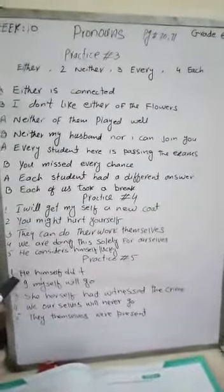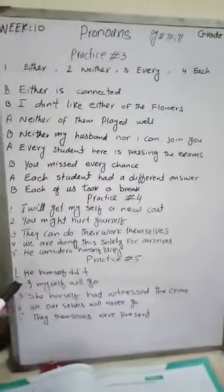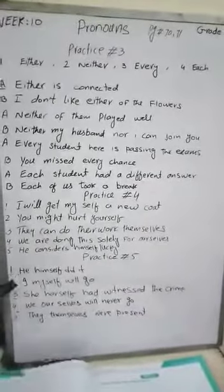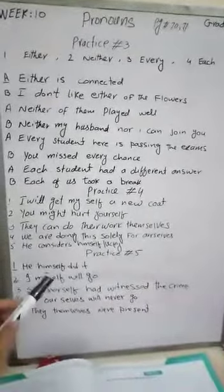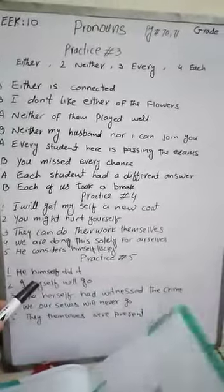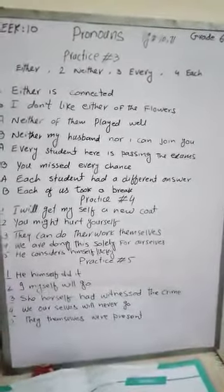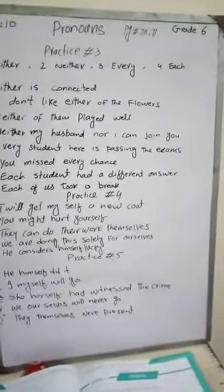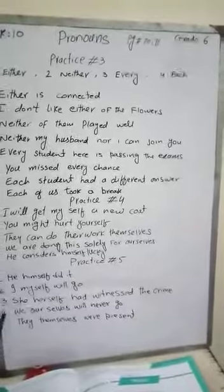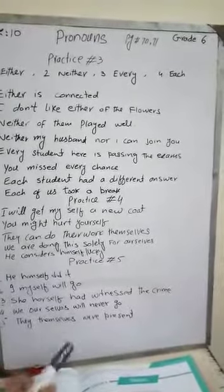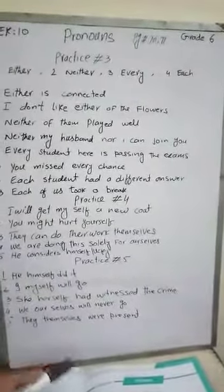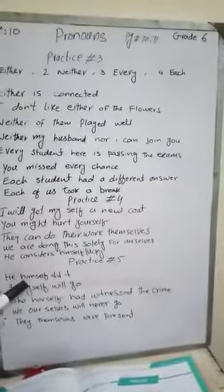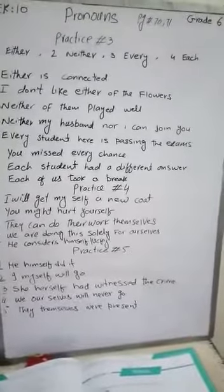In 'he himself did it', right after 'he' we used 'himself' — we did not use any verb after 'he', but used 'himself' first. When the self-pronoun is used right after the personal pronoun, that is emphatic pronoun. In reflexive pronoun: first personal pronoun, then verb, then reflexive pronoun (self). But in emphatic: we use subject, then reflexive pronoun, then verb.